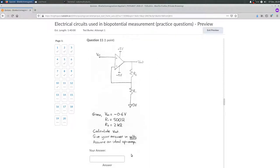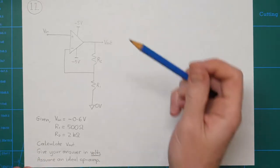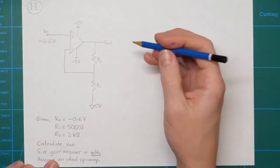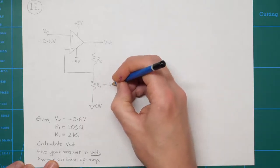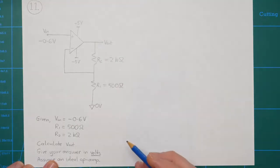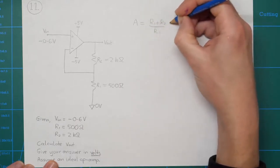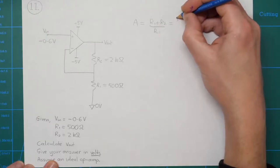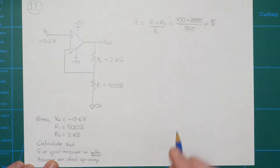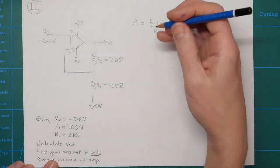Question 11 is another non-inverting op-amp circuit. This time the input voltage is minus 0.6 volts, and we're trying to calculate Vout. The two resistor values are 500 ohms and 2 kilohms (2000 ohms). The gain of the circuit is (R1 plus R2) over R1, which is (500 plus 2000) divided by 500, equal to 5.